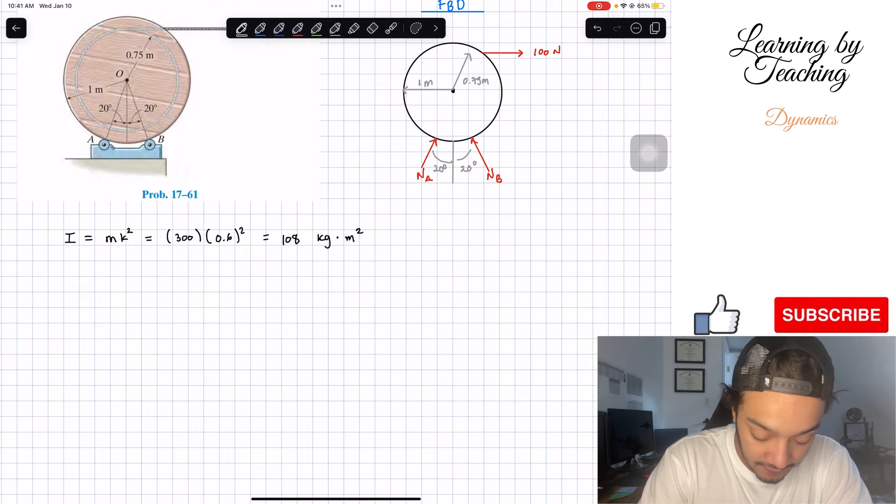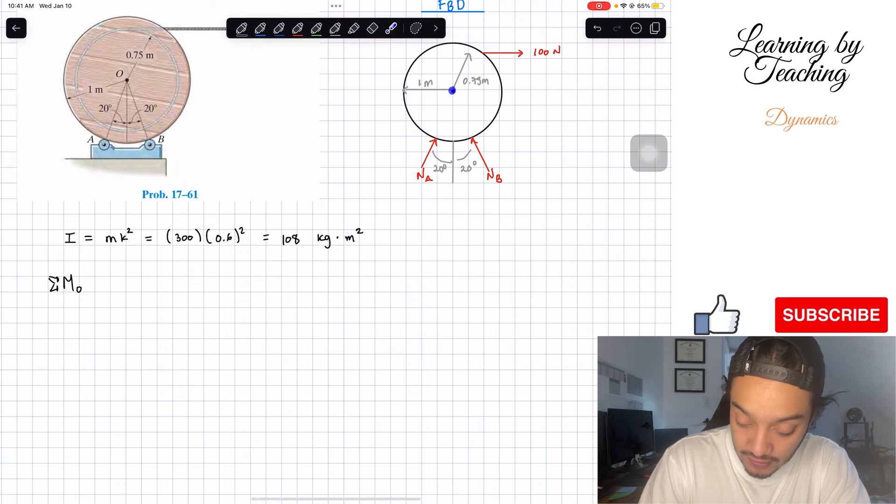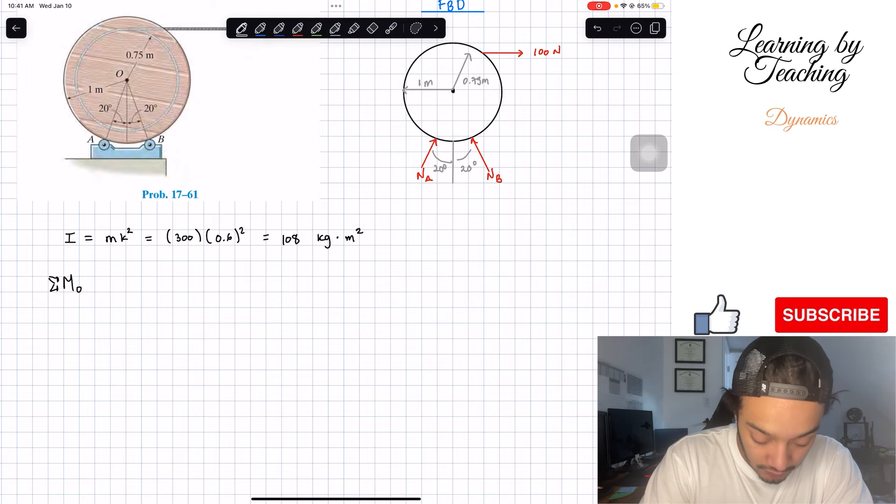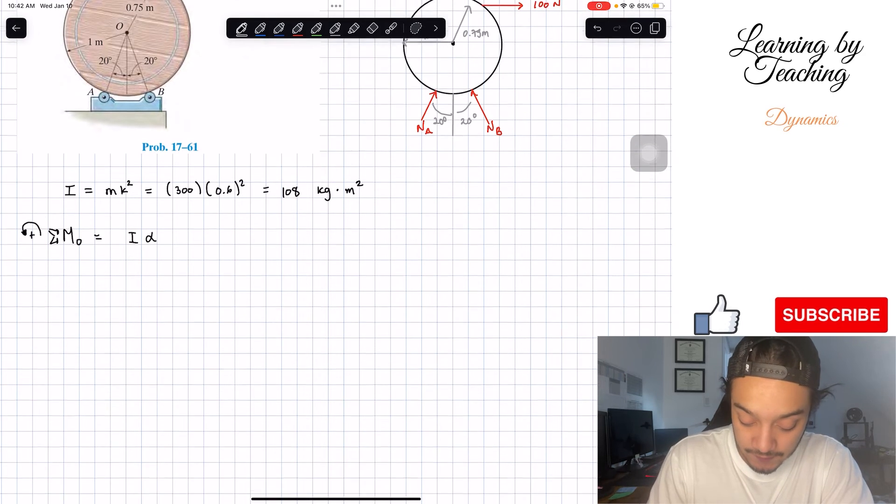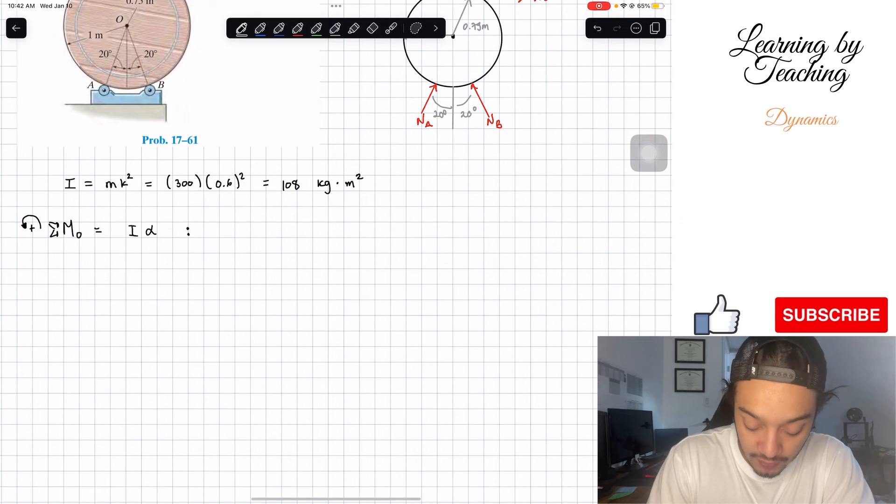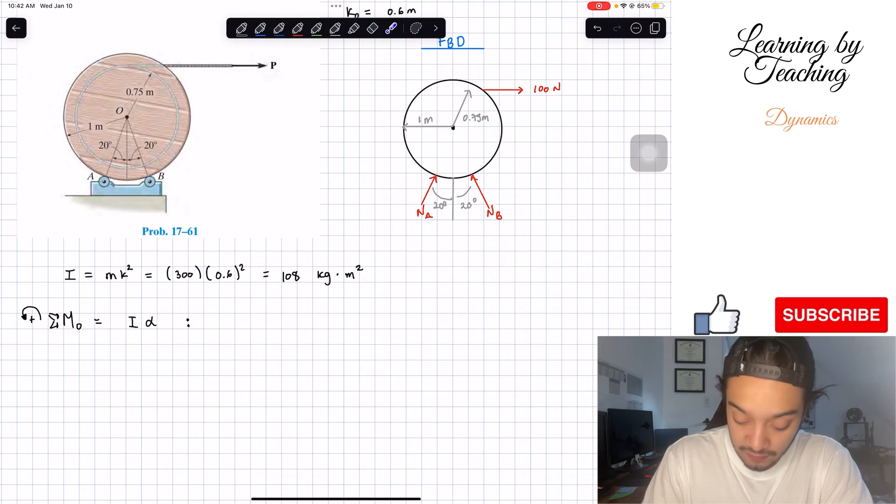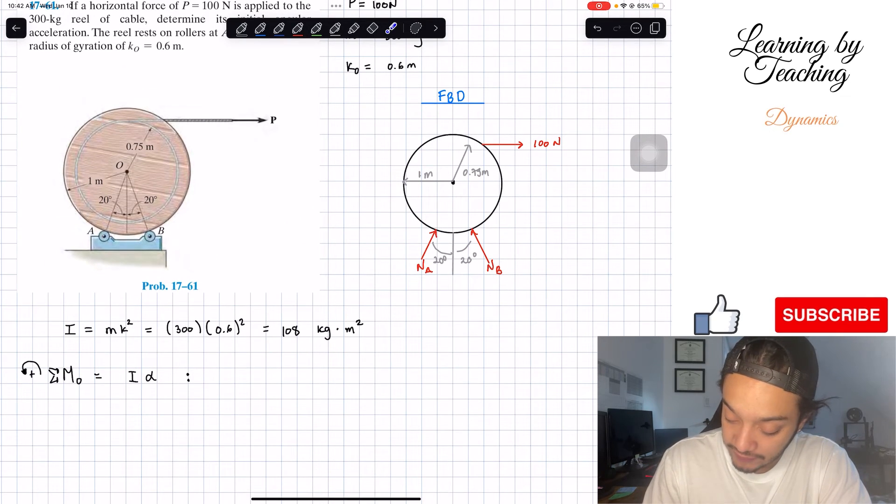In order to find our acceleration, we're going to do a summation of moment above my point O, which in this case is our center of gravity. We're going to assume that going counterclockwise is positive. This should be equal to our moment of inertia multiplied by our acceleration. We have three forces.